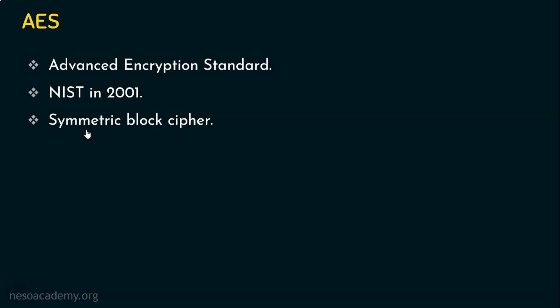AES is also a symmetric block cipher. Symmetric means the same key is used for both encryption and decryption. AES is not only a symmetric cipher — it is also a block cipher, where it takes a group of bits as input and produces a group of bits as output. To be precise, it takes 128 bits as input (the plaintext size) and 128 bits as output (the ciphertext size). Because of its many powerful features, AES is widely used even today.